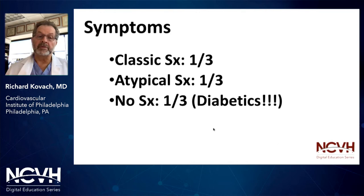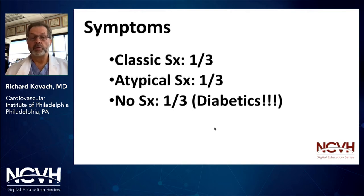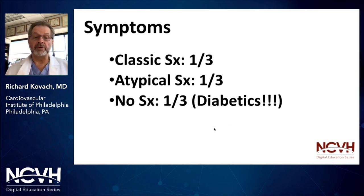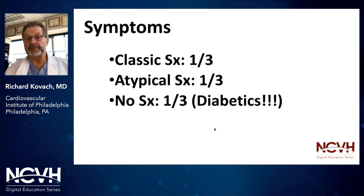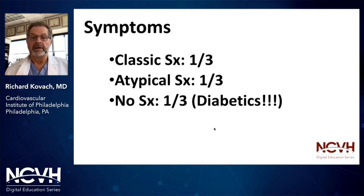Classic symptoms — claudication, pain or cramping in the muscles upon ambulation relieved with rest — really only occur in about one-third of patients. About a third will have atypical symptoms, and about a third will have no symptoms whatsoever, particularly diabetics. In a patient with severe diabetes, a podiatrist can literally do an amputation of a toe without anesthesia because patients don't feel pain. They're often unaware they even have a wound.